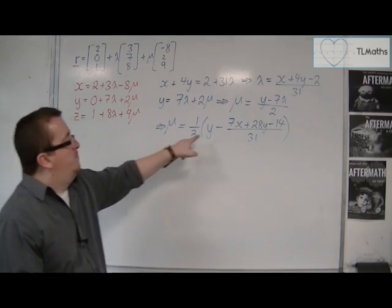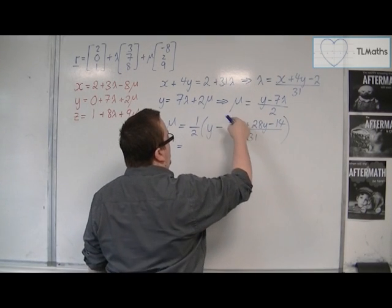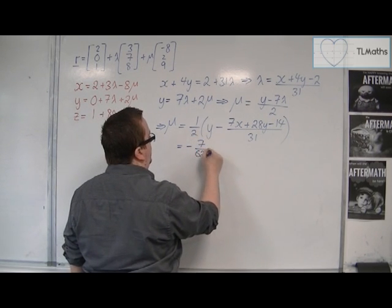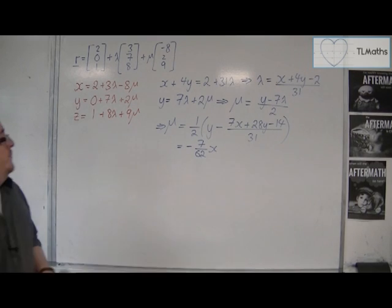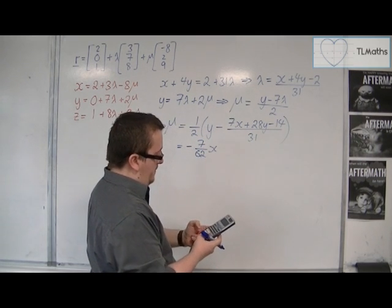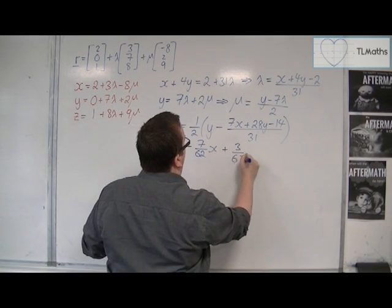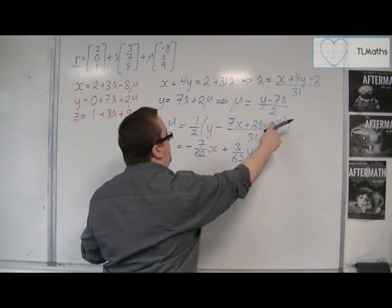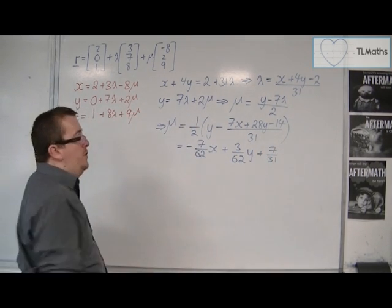Now I want to simplify this because it's looking absolutely horrible at the moment. Multiplying through: we get minus 7 over 62 times x, then 28 over 31 is subtracted from 1 giving 3 over 31, and half of that is 3 over 62, so plus 3 over 62 times y. Then the constant term: minus minus 14 over 31, so half of 14 over 31 is 7 over 31. So μ equals −(7/62)x + (3/62)y + 7/31.